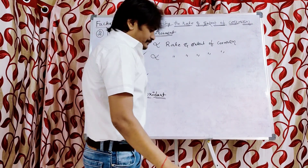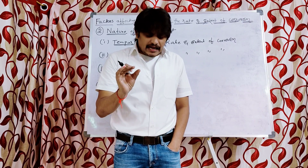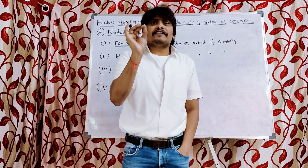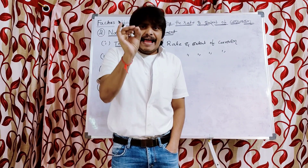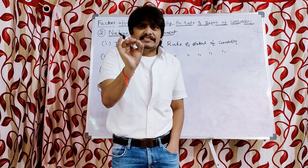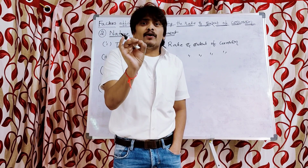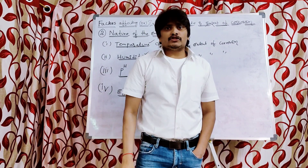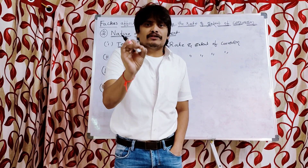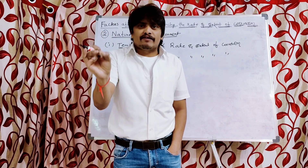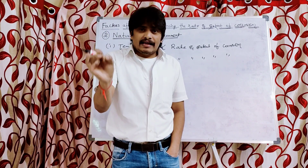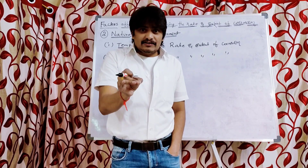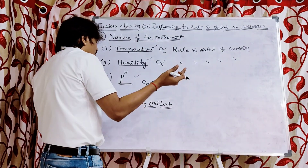The third sub-factor is pH. Under acidic conditions, the rate and extent of corrosion is more, because H⁺ ions — which are part of an acid — accelerate the rate and extent of corrosion by acting as a catalyst during corrosion. We know that pH equal to 7 is neutral, pH less than 7 is acidic, and pH greater than 7 is basic. So under acidic conditions, meaning pH less than 7, the rate and extent of corrosion is higher.